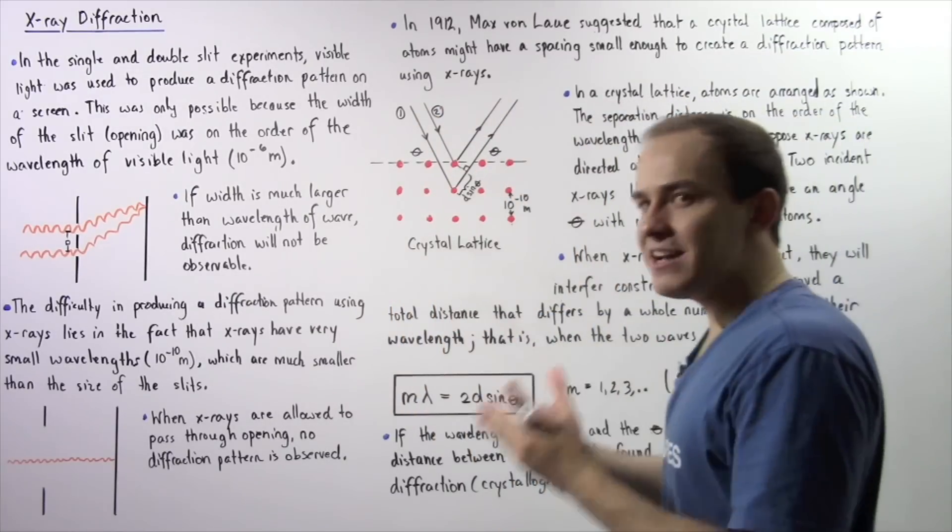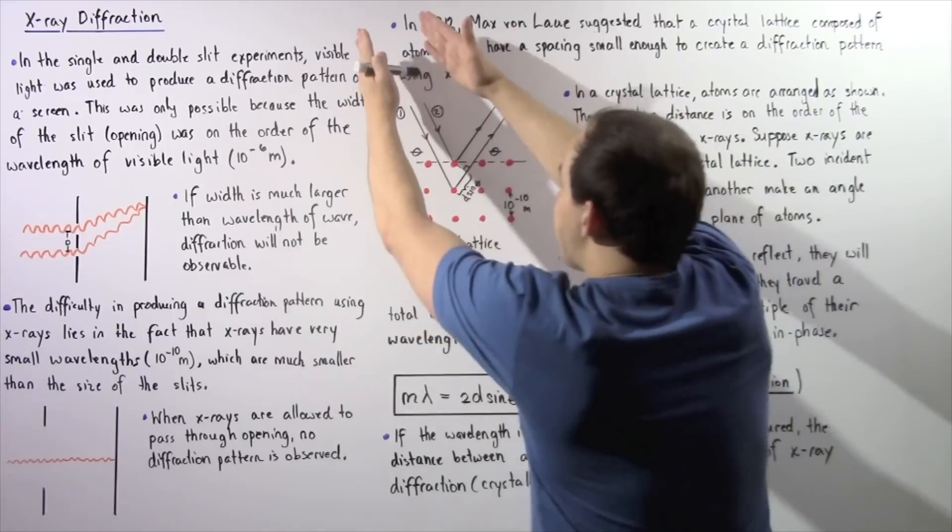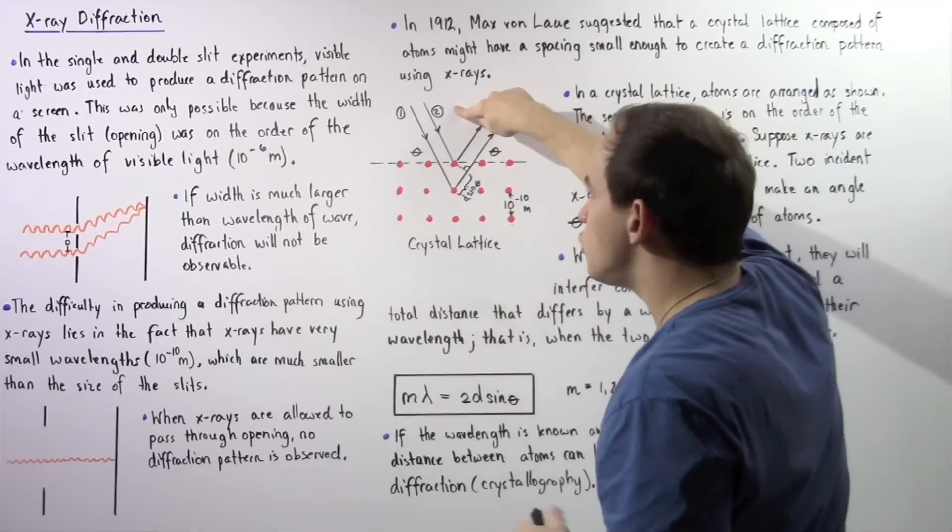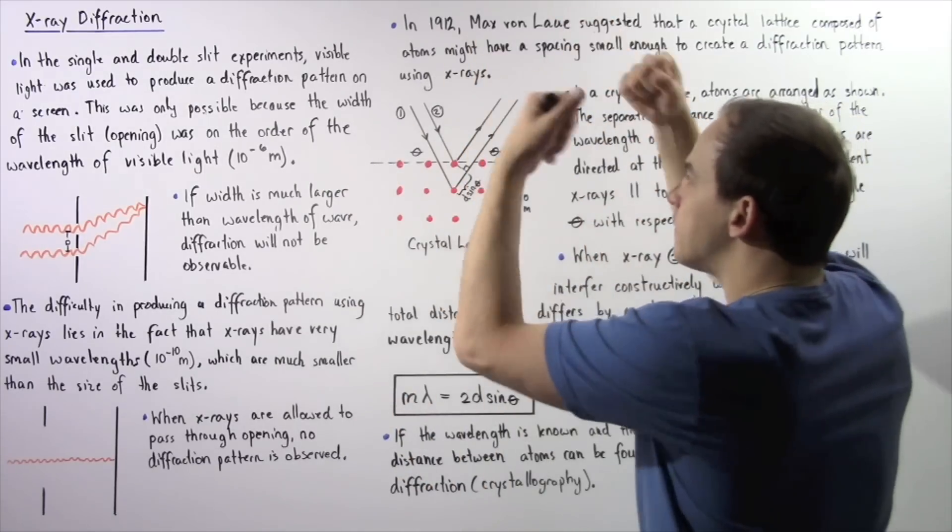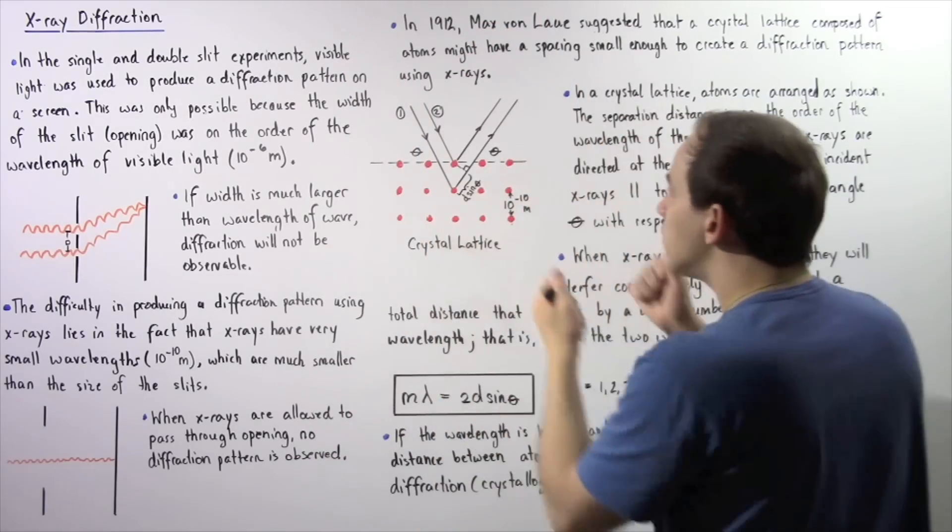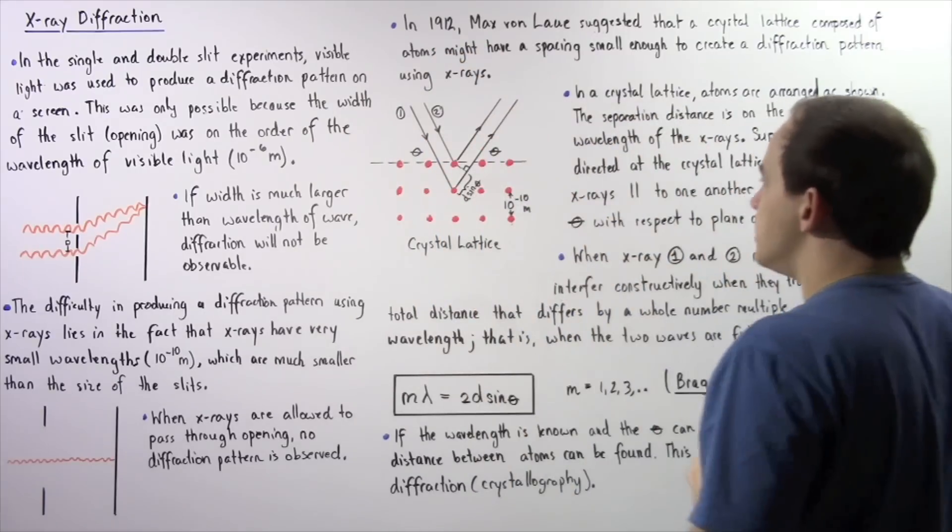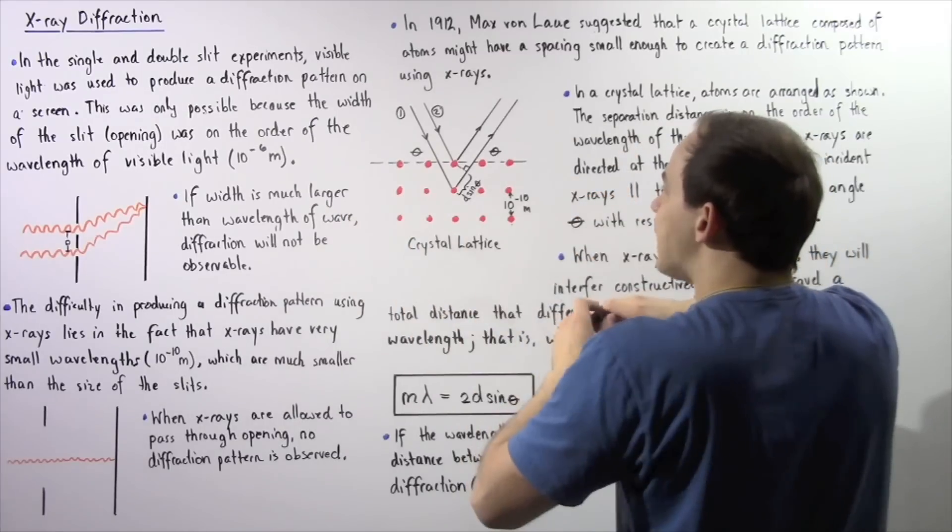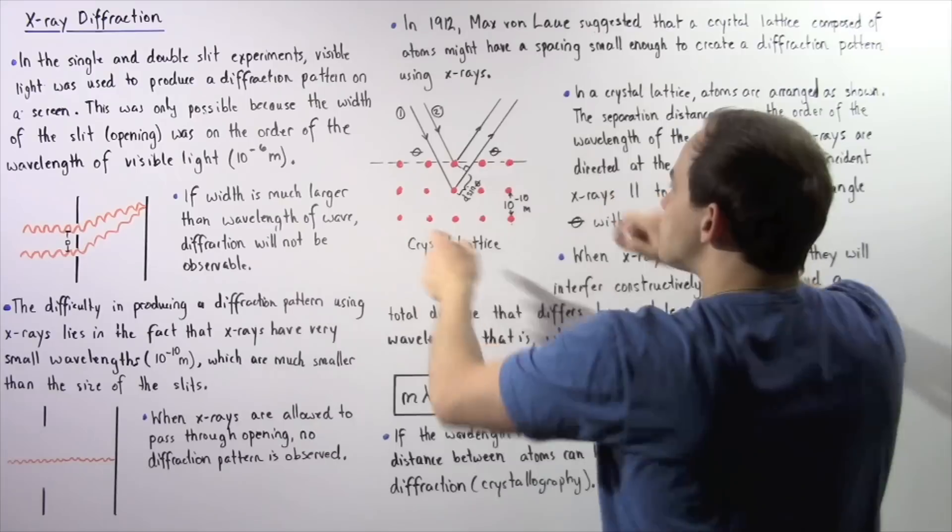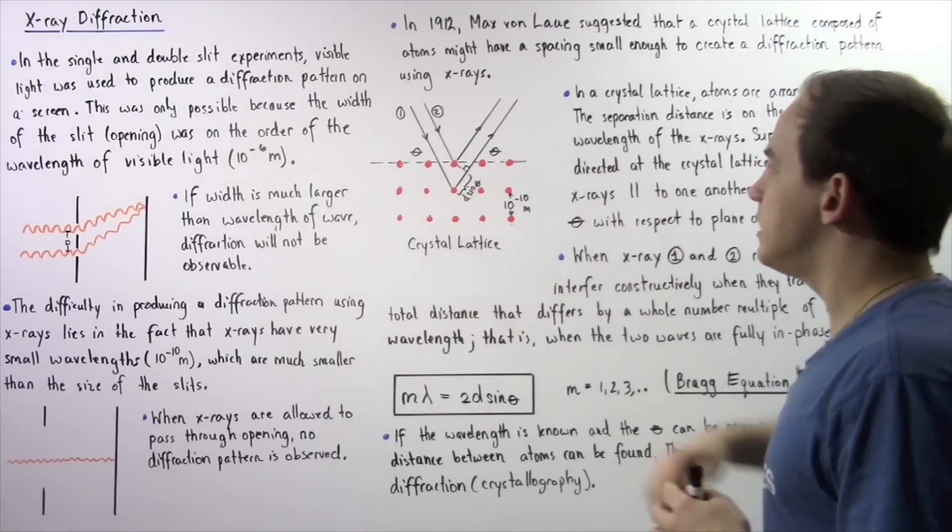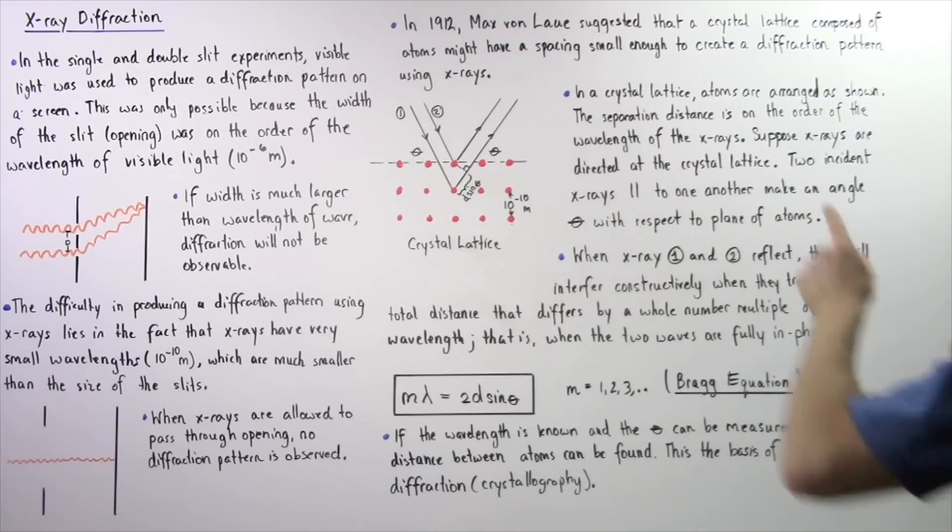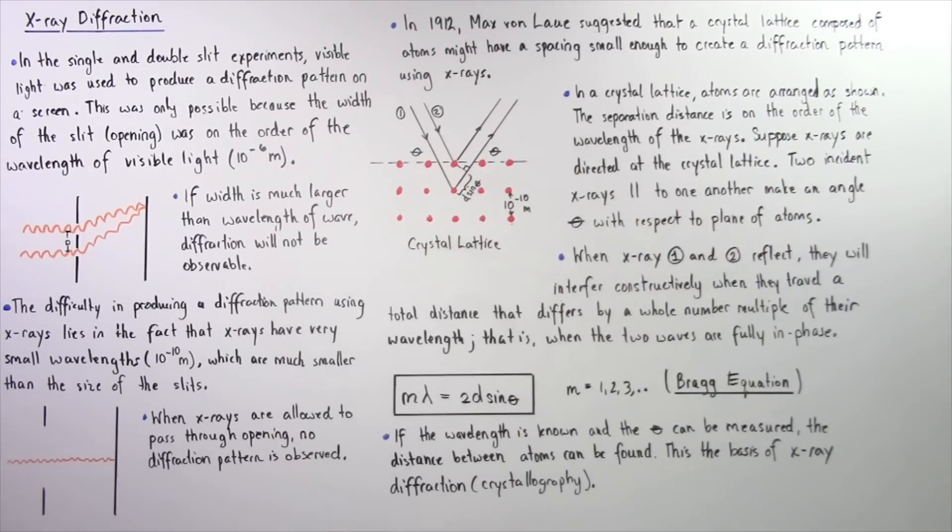Let's suppose we have X-rays coming as shown in the diagram. We have X-ray 1 and X-ray 2. Because they're coming from very far away, we're assuming they're parallel with respect to one another. When they hit the following plane of the crystal lattice shown by the dashed line, they make an angle theta with respect to this plane. In a crystal lattice, atoms are arranged as shown in this diagram.